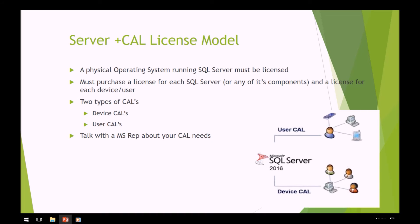Between the two license models, you need to make sure that you're talking to your Microsoft rep or your third-party rep about what your environment looks like, to ensure you're in the right licensing model. There could be times where a server-plus-CAL model does not make sense and a per-core model might be a better choice. You want to talk to whoever you're buying your licensing from in order to make sure you're getting the best value.